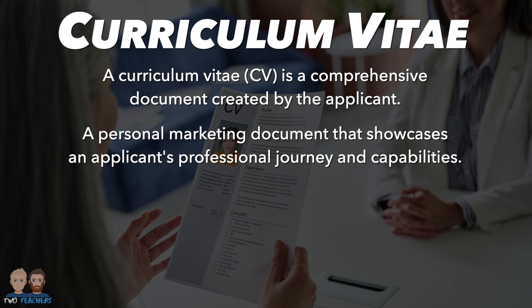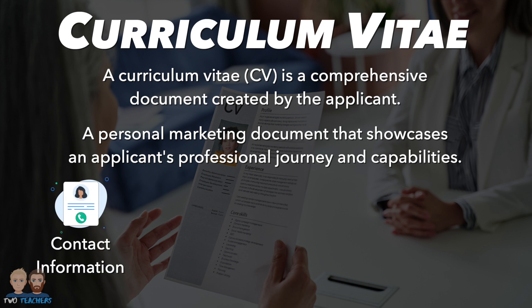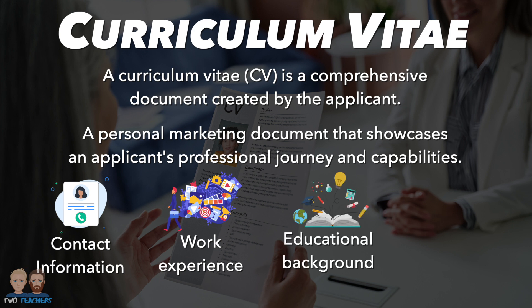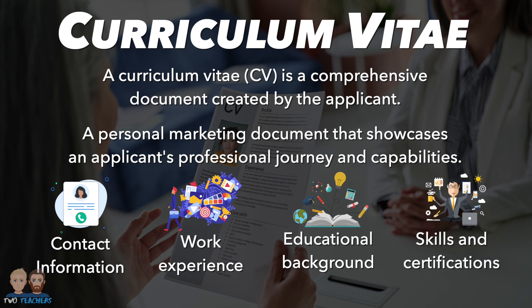Key sections typically found in a CV include contact information — the applicant's name, phone number, email address, and sometimes a physical address. Work experience is also included, detailing the applicant's employment history including job titles, names of employers, dates of employment, and a brief description of responsibilities and accomplishments in each role. Another key section is educational background, which allows the applicant to list academic achievements including qualifications earned, institutions attended, graduation dates, and any relevant coursework or honours.